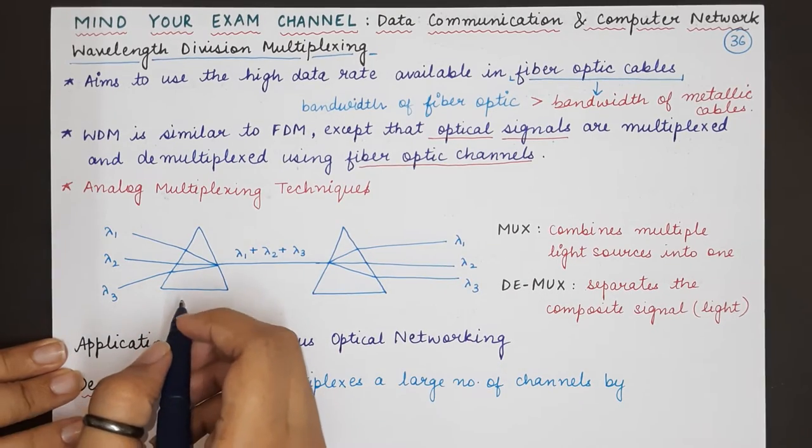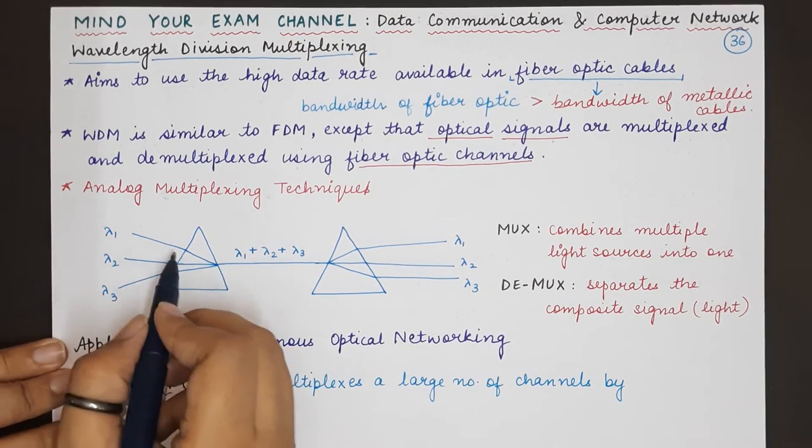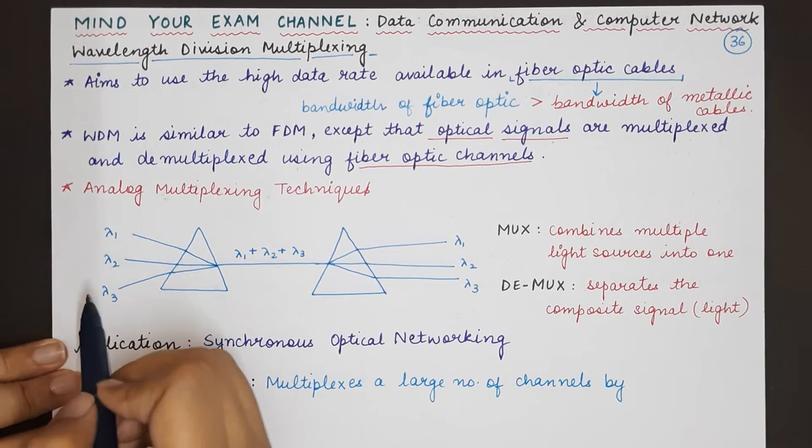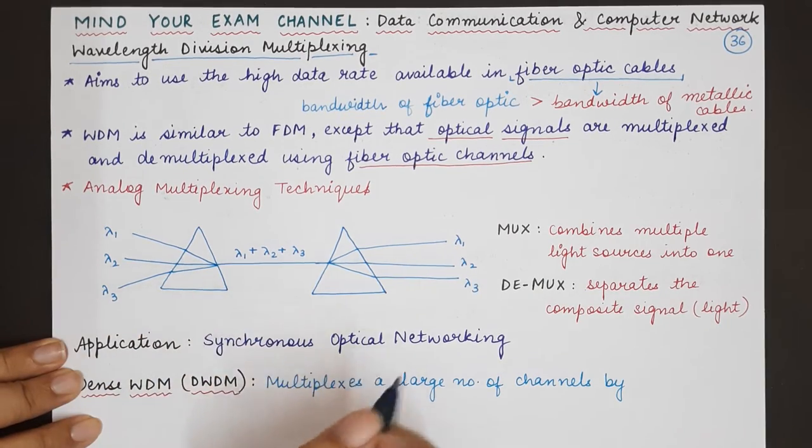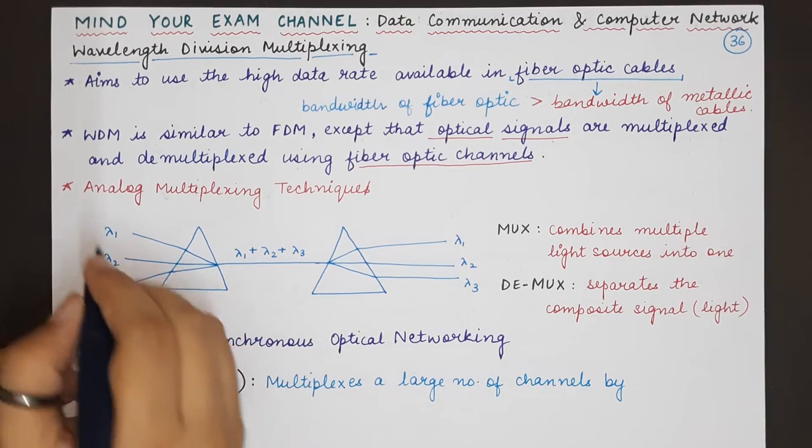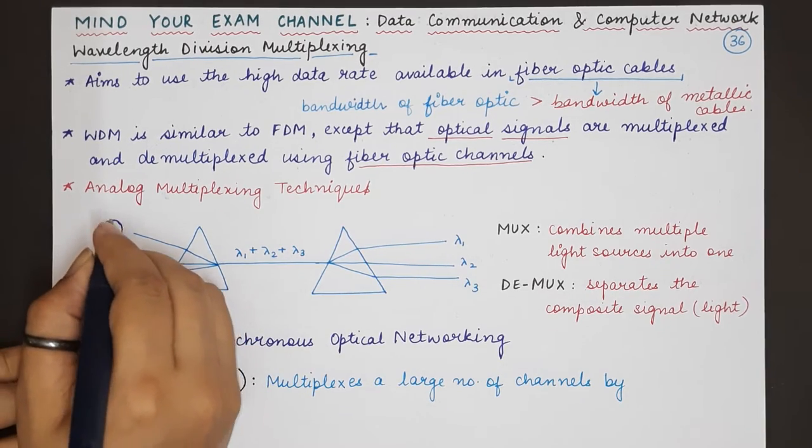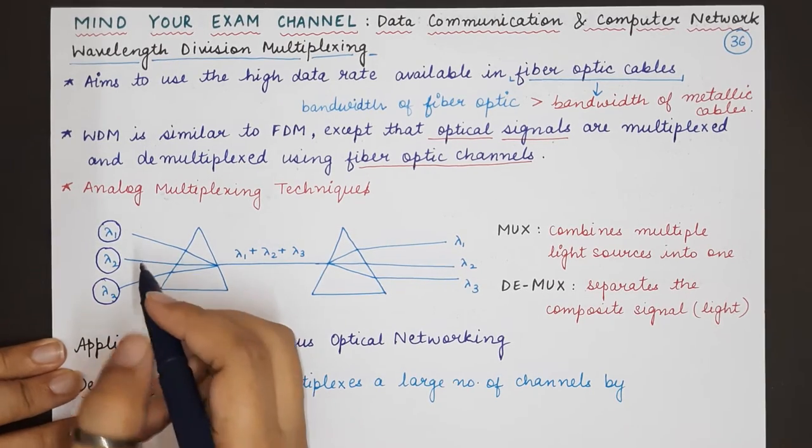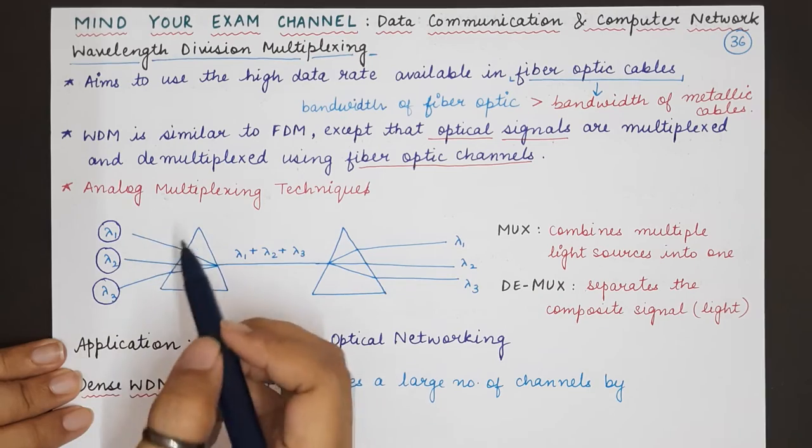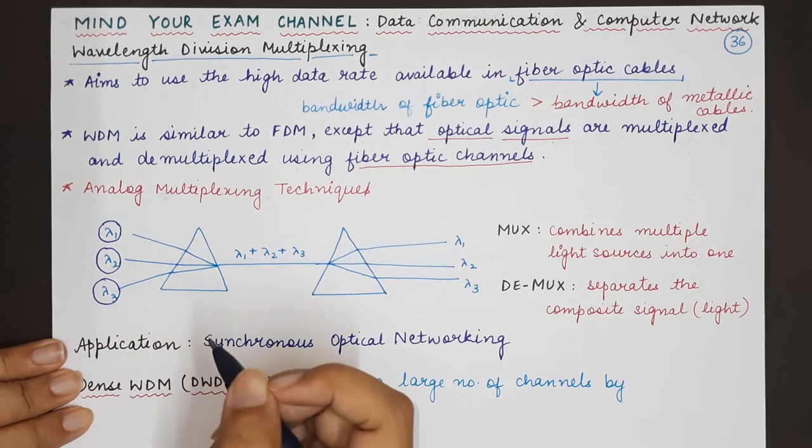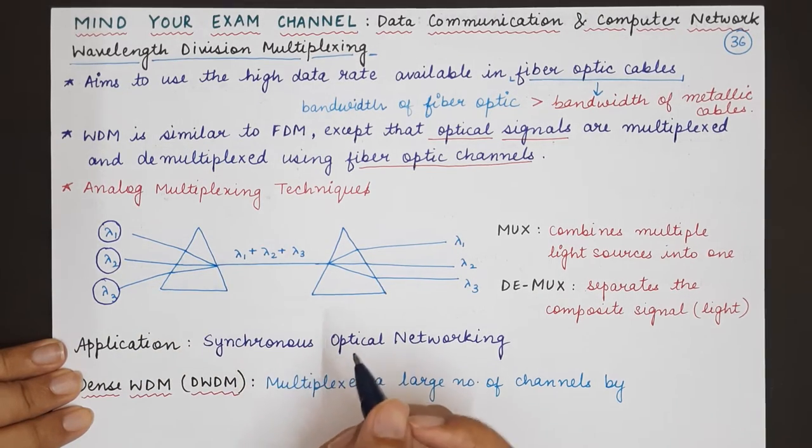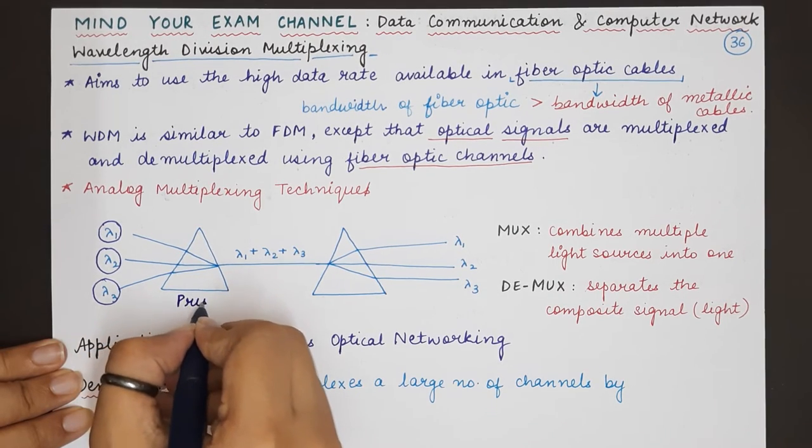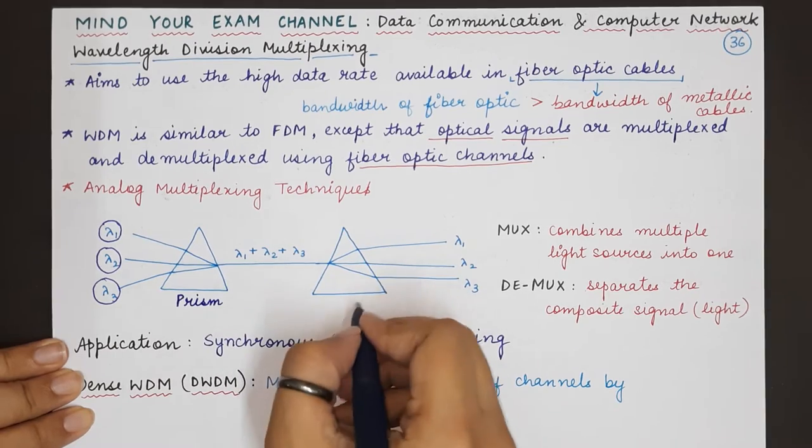One thing you need to remember is that in case of optical signals we will be talking in terms of their wavelength rather not in the terms of their frequency. So wavelengths are becoming important here and wavelengths of optical signal basically defines or individually characterizes that particular signal.